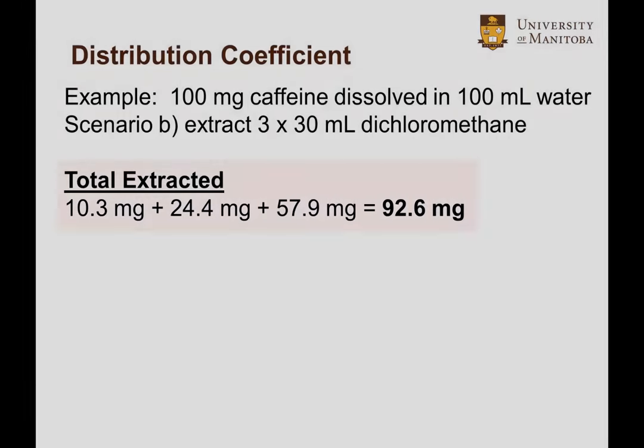So when all three dichloromethane extractions are combined, a total of 92.6 milligrams of caffeine is extracted. Compare that to the 80.5 milligrams in the one large aliquot extraction. So I hope I've convinced you why more frequent smaller volumes is better than one large volume.